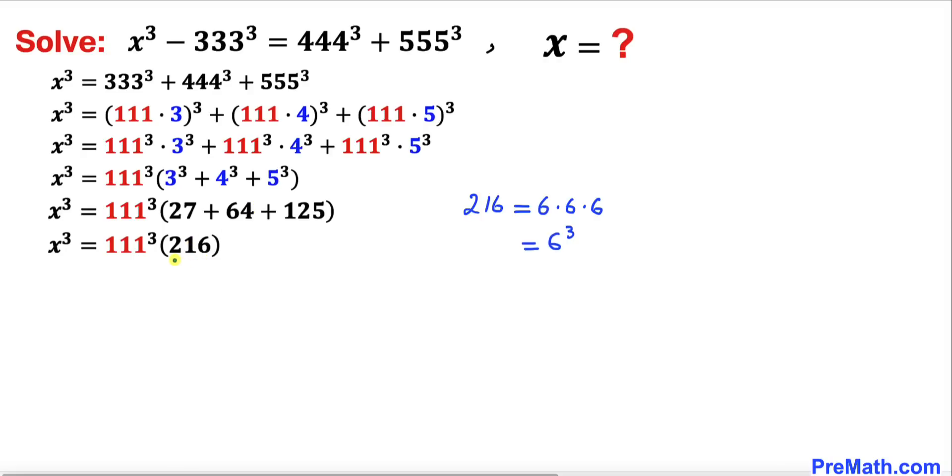Now let's focus on this 216 once again. 216 could be written as 6 × 6 × 6, which equals 6³, and here I have replaced this 216 by 6³.